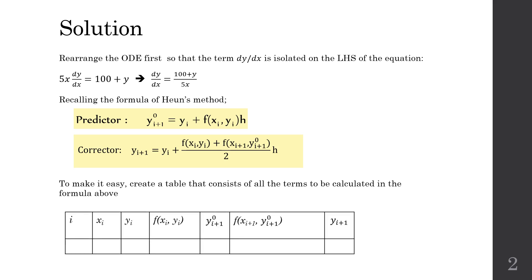To make it easy, let's create a table that contains the few variables within this formula. So this is the table that I created. It's up to you if you want to add more columns, for example xi+1 column, or maybe another column that calculates the average gradient in the corrector's formula. It's up to you, but for me this is already enough.